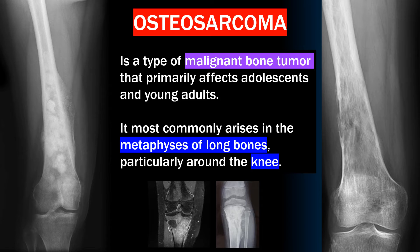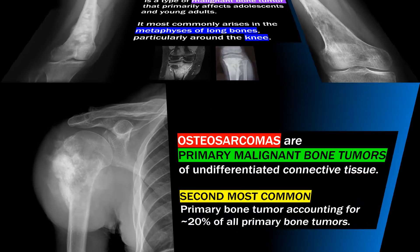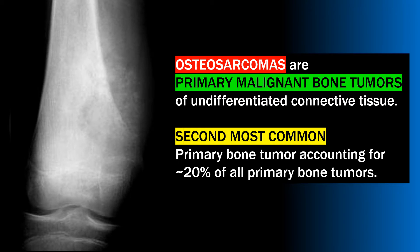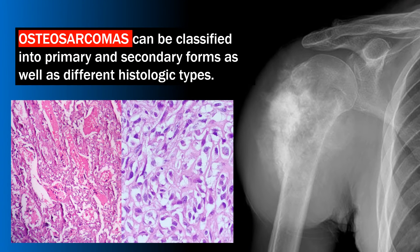An osteosarcoma is a type of malignant bone tumor that primarily affects adolescents and young adults. It most commonly arises in the metaphysis of long bones, particularly around the knee. Osteosarcomas are primary malignant bone tumors of undifferentiated connective tissue and are the second most common primary bone tumor, accounting for approximately 20 percent of all primary bone tumors.